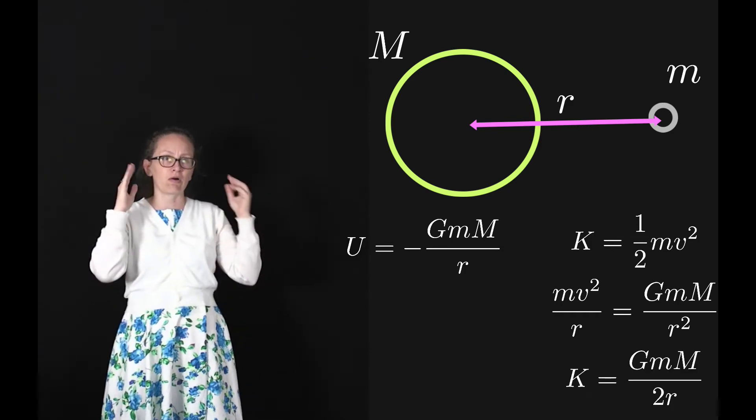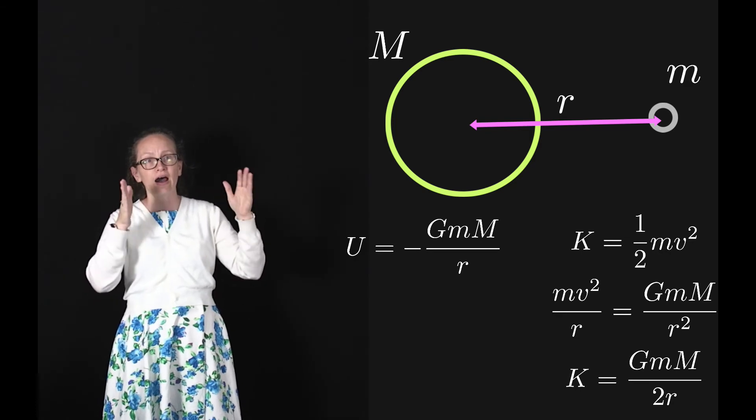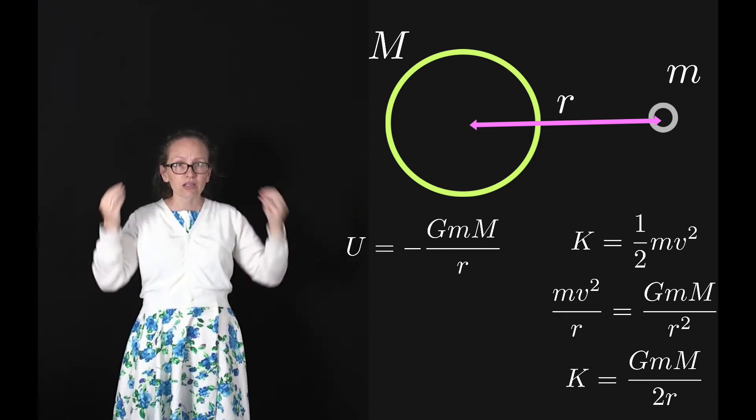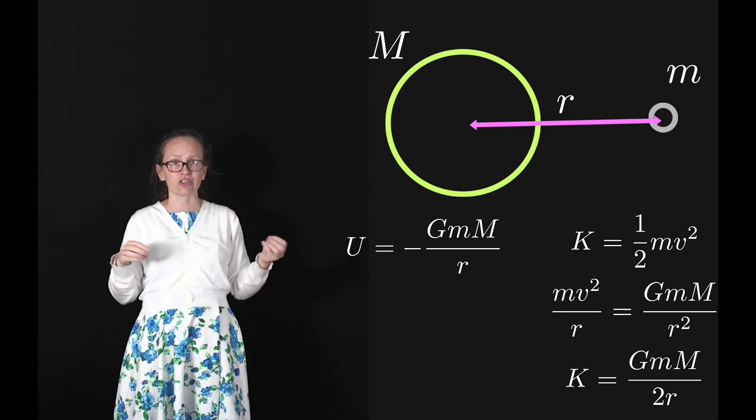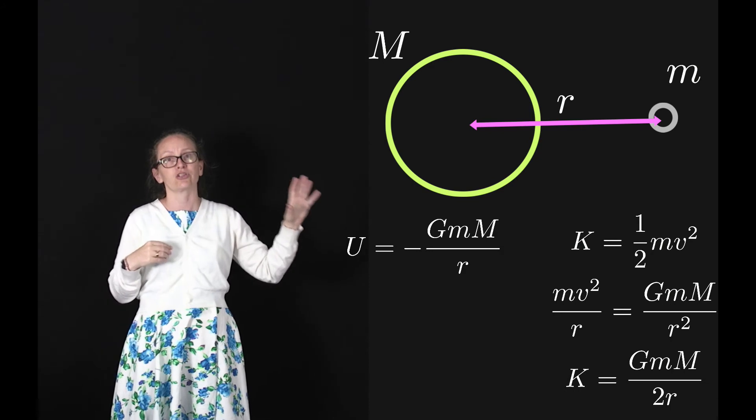So we can say that one-half of mv² is going to be one-half of GmM/r, and so our kinetic energy must be equal to GmM/2r.